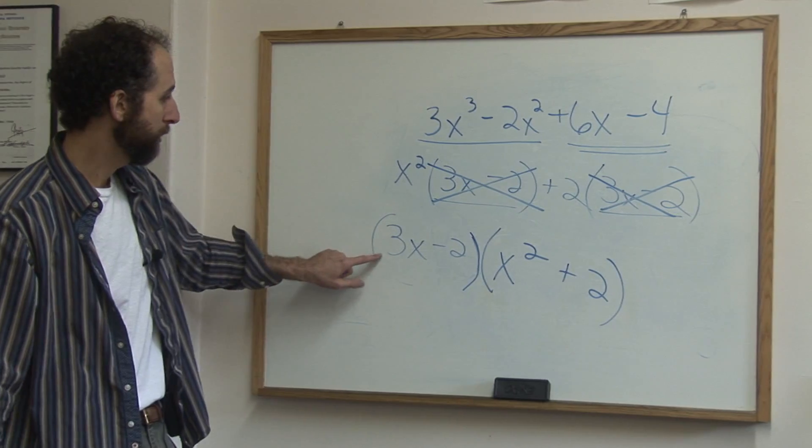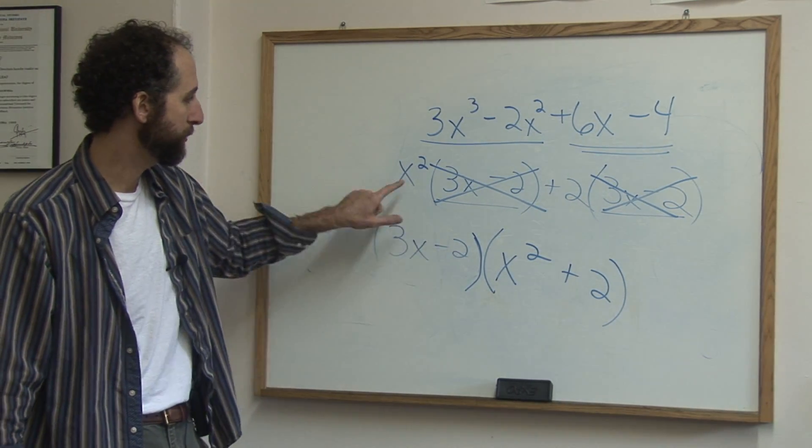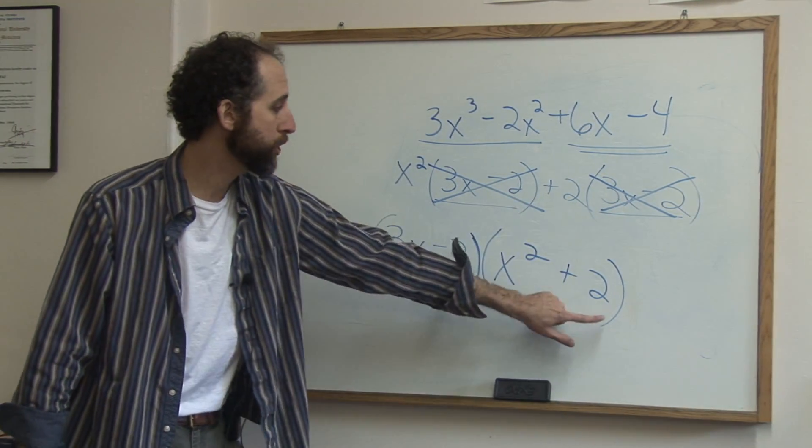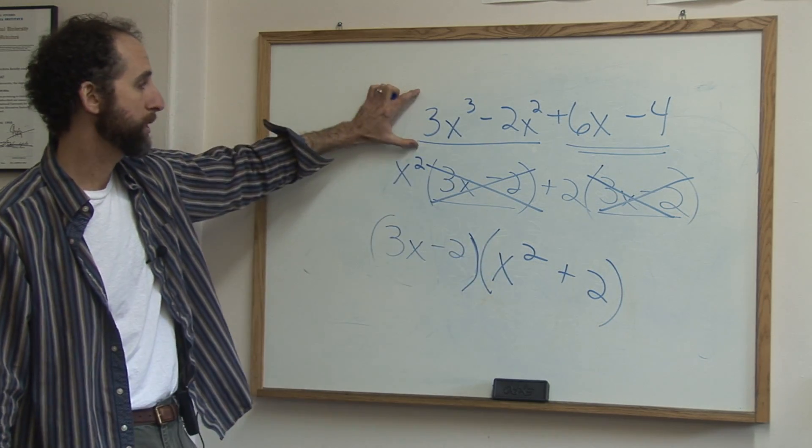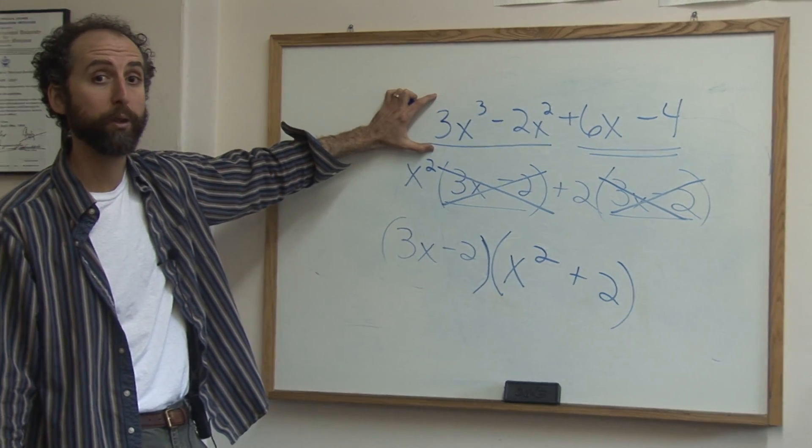So my final answer is 3x minus 2 times x squared plus 2. And that's the factored form of this polynomial. That's the right side. Everything continues to turn. Thank you.